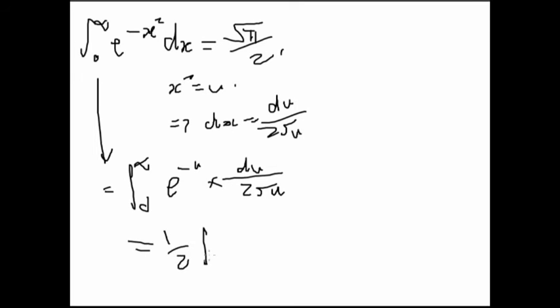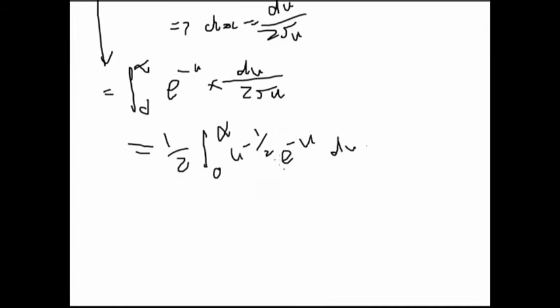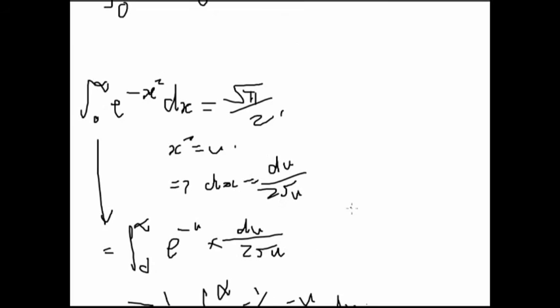And that's equal to a half times u to the minus one half e to the minus u du. Again, if you compare this to the gamma definition, this is just gamma of minus a half plus one, which is a half gamma a half. And as we proved earlier, well, hand-wavingly proved, that is square root pi. So we have square root pi over 2, which is a Gaussian integral.